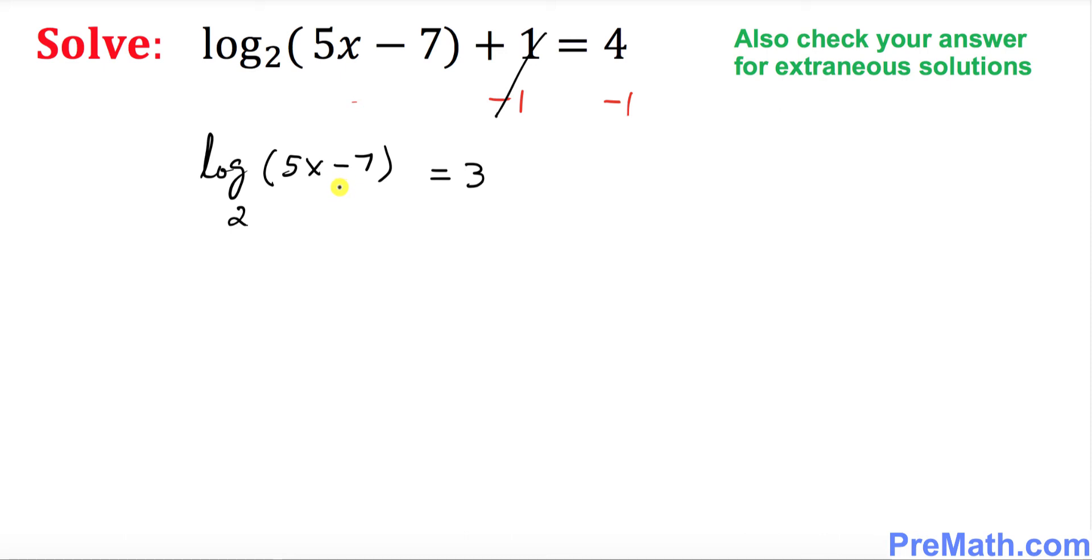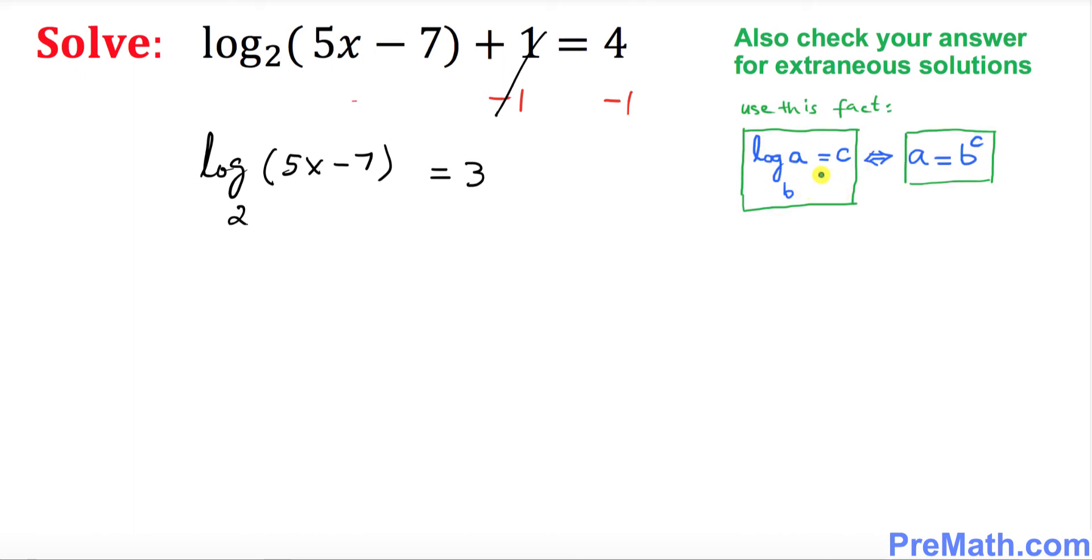Now the next thing what we want to do is we want to make things a little bit simpler by converting this logarithmic equation into an exponential one. So here's the fact that we're going to be using: we're going to go from the logarithmic notation into exponential notation. That means this base 2 is our b, this part is an a, and the right hand part is our c.